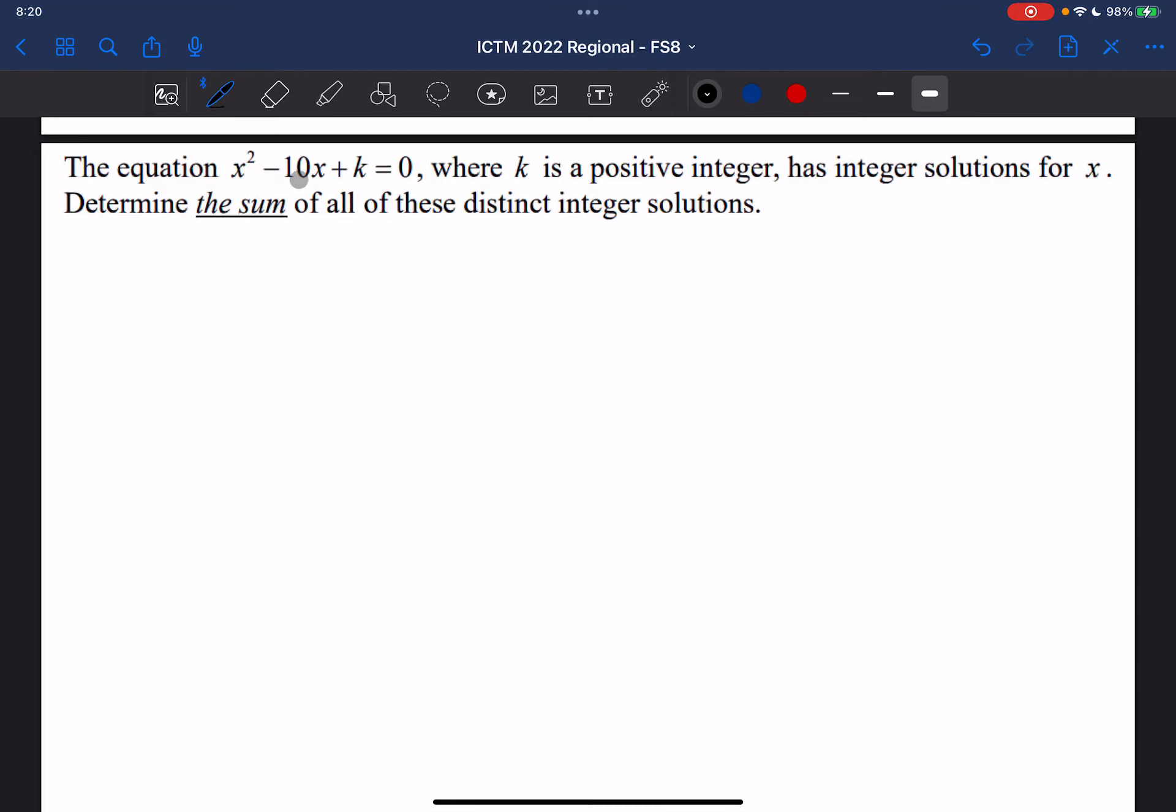The equation x squared minus 10x plus k equals 0, where k is a positive integer. So whatever k is has to be positive, and it has integer solutions for x.